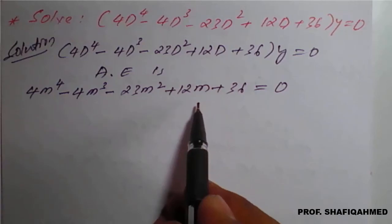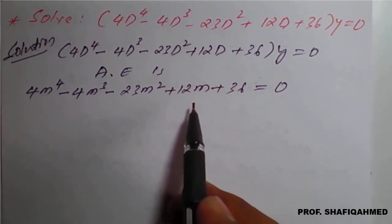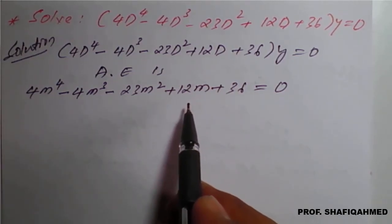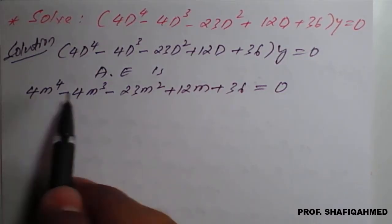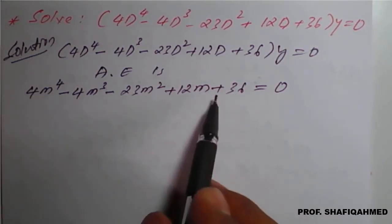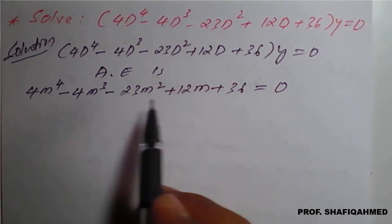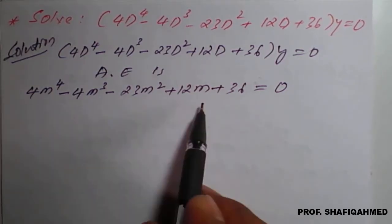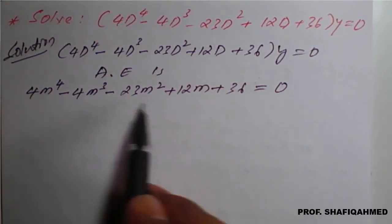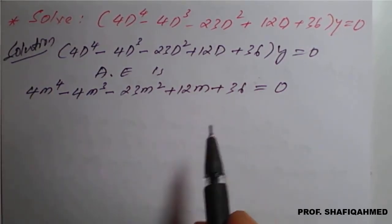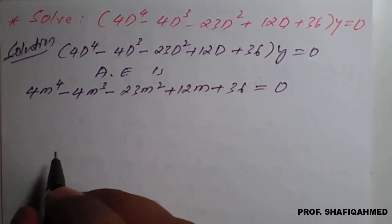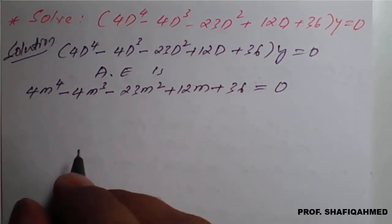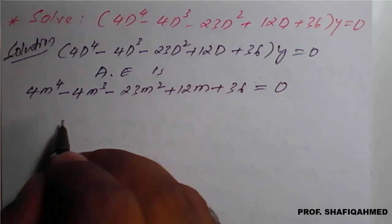This is an equation of order 4, meaning we will get 4 roots. But to simplify, there are 5 terms, so we cannot go directly. For this, we will go for a synthetic method. To get a root, we will apply the synthetic division method here.